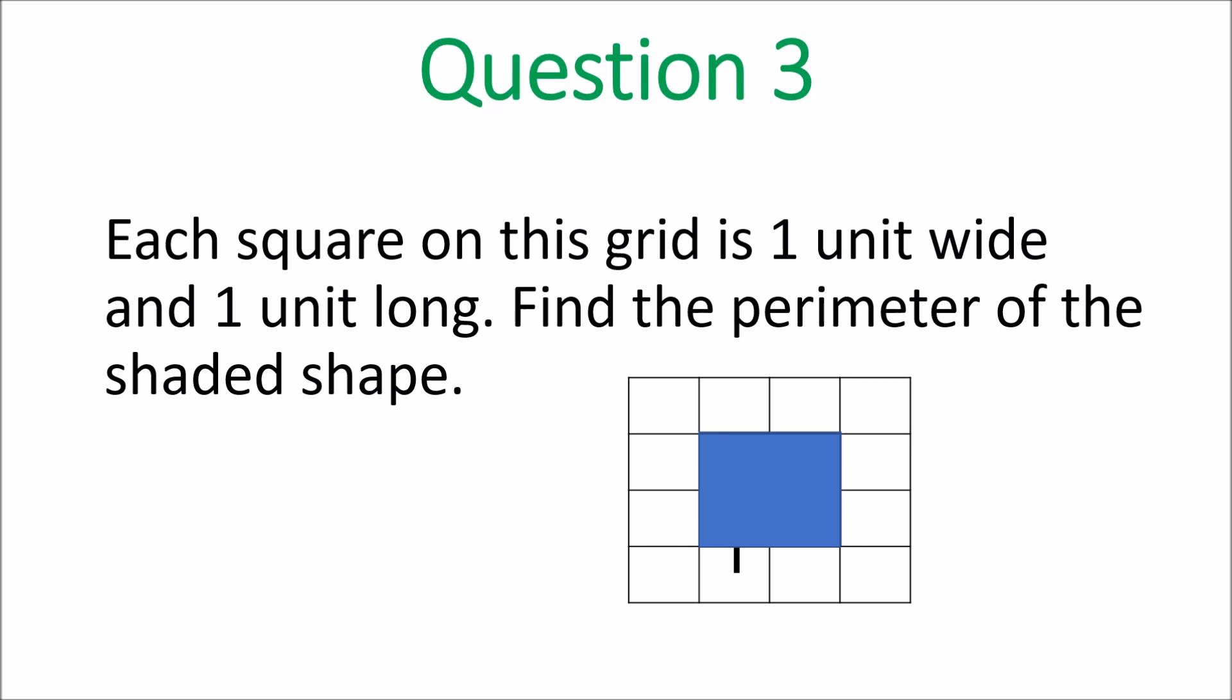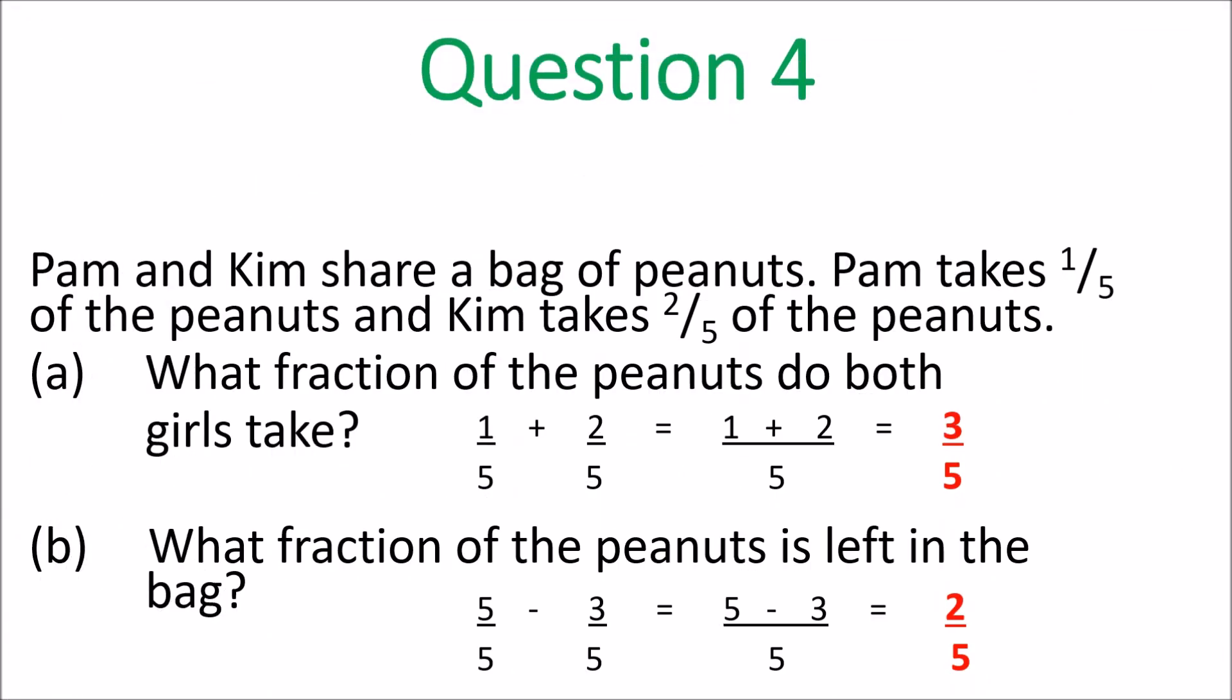Question 3. Each square on this grid is 1 unit wide and 1 unit long. Find the perimeter of this shaded shape. So you mark each side. 1, 2, 3, 4, 5, 6, 7, 8. What's the answer? 8 units. That's correct. That's the perimeter.